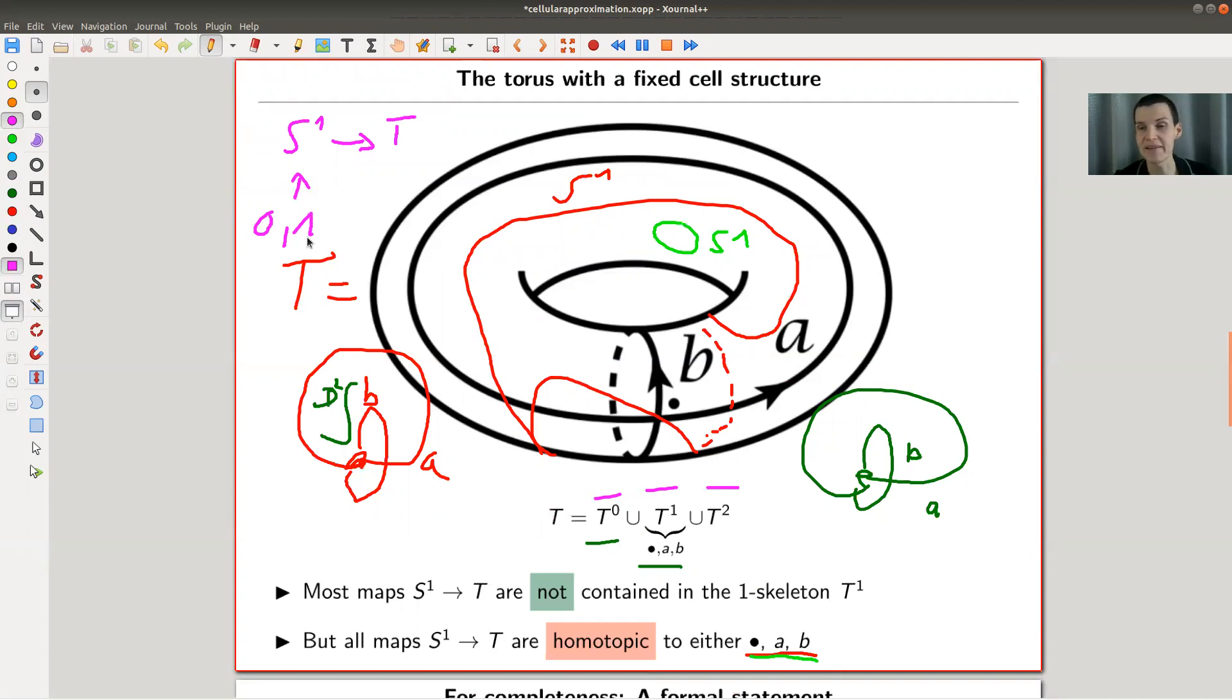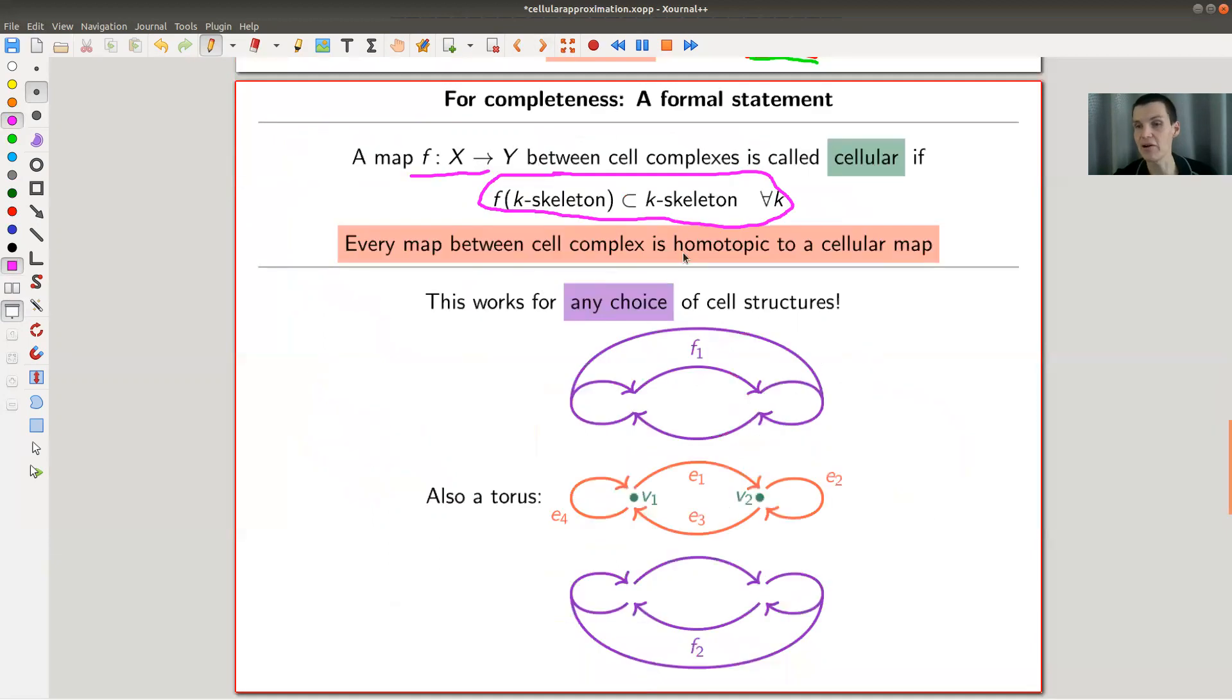And all I said is that the one skeleton can be homotoped, made homotopy equivalent, such that it ends completely in the one skeleton of the torus, although most maps will miss it. And this is not exactly the statement: every map between cell complexes is homotopic to a cellular map.